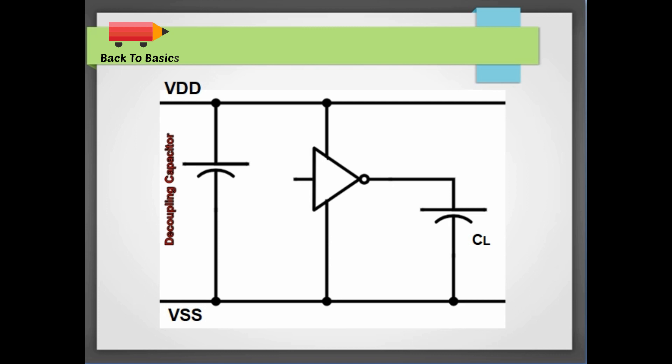So here is where decap cells come into picture. So what are these decap cells? These decap cells are essentially capacitors that hold a reservoir of charge and they are generally placed near the power hungry cells.